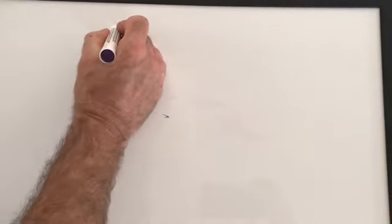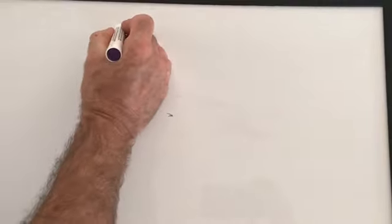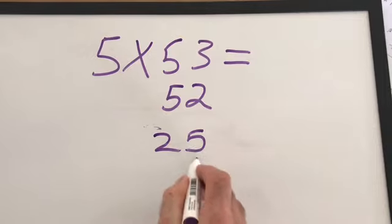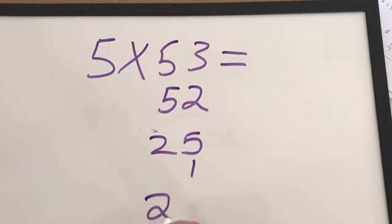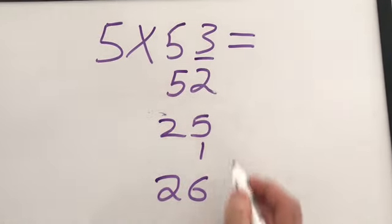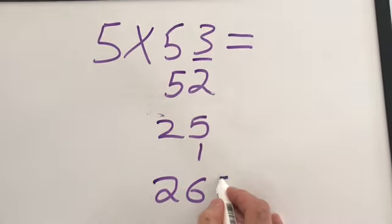Now let's apply partitioning. 5 times 53 equals. It's an odd number. I look at the previous even number, 52. I know that partitioning is dividing this into a 50 and a 2. Half of 50 is 25. Half of 2 is 1. I get 26. Because it's an odd number, I'm going to add a 5.